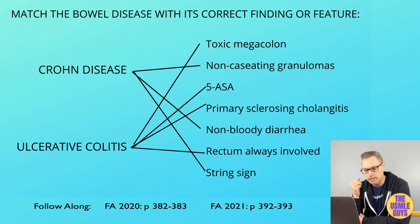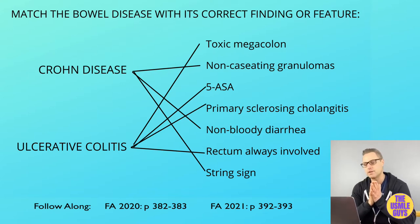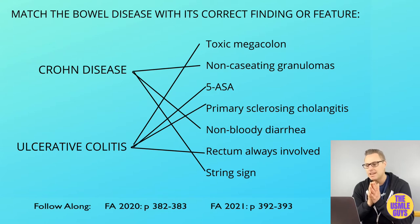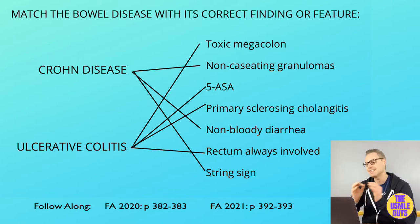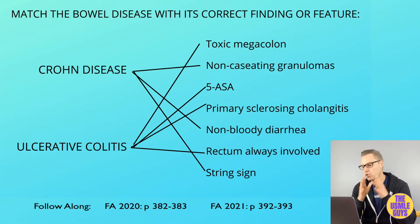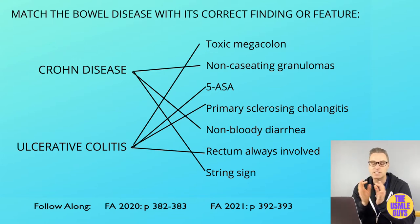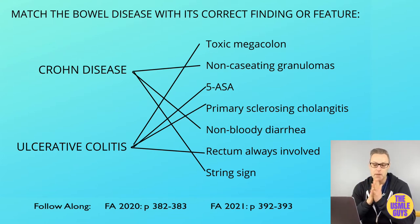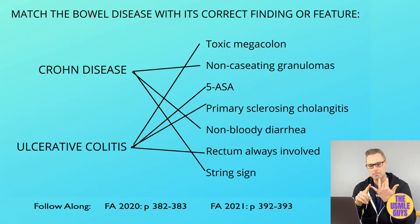Microscopically, Crohn's disease is characterized by non-caseating granulomas and lymphoid aggregates, while ulcerative colitis lacks granulomas but demonstrates crypt abscesses, ulcers, and bleeding — which is a big sign.